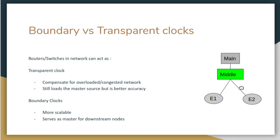The two kinds of clocks are transparent clocks and boundary clocks. In transparent clocking, as packets travel from main to E1, the middle box corrects for the time the packet spent there. If the box was congested and a packet stayed for 10 microseconds, it records the entry and exit times, and corrects that error on the PTP packet so the end device can compensate. The transparent clock corrects the offset in-line, while the end devices continue talking directly to each other.